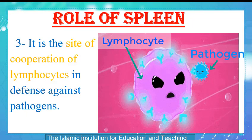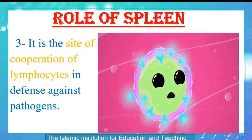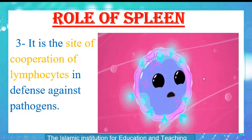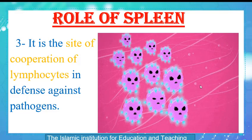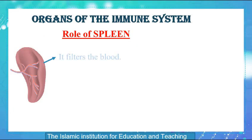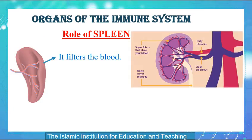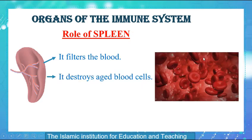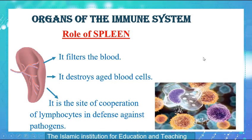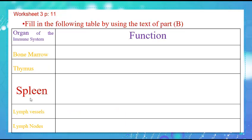The third role of the spleen is the site of cooperation of lymphocytes in the defense against microbes. Pathogens are likely to encounter lymphocytes in the spleen, which then increase in number and cooperate in the defense against pathogens, so that an immune response is triggered. In summary, the spleen filters the blood, destroys aged blood cells, and is the site of cooperation of lymphocytes in the defense against pathogens. Please open your worksheets, page 11, and fill in the table with the role of the spleen.